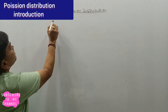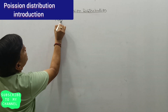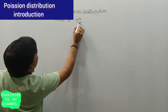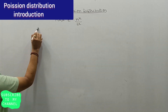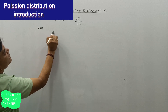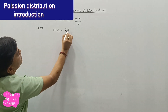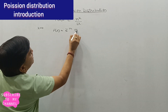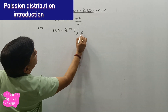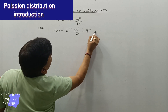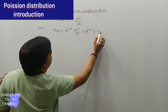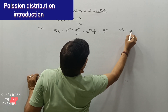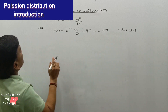The formula for Poisson distribution is P(x) equals e raised to power minus m, multiplied by m raised to power x divided by factorial x. If x equals 0, then P(0) equals e raised to power minus m, times m raised to power 0 divided by factorial 0. Since m raised to power 0 equals 1 and factorial 0 equals 1, P(0) equals e raised to power minus m.